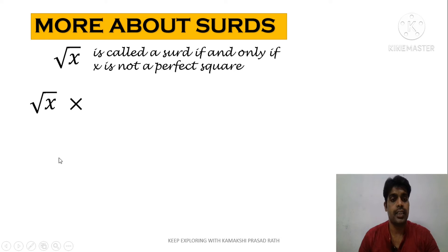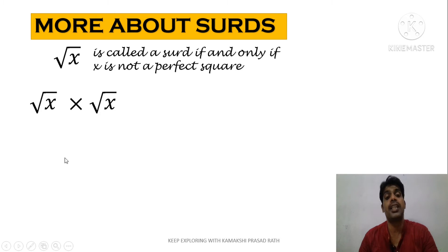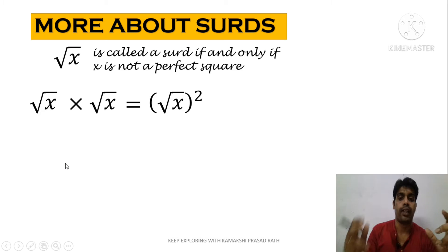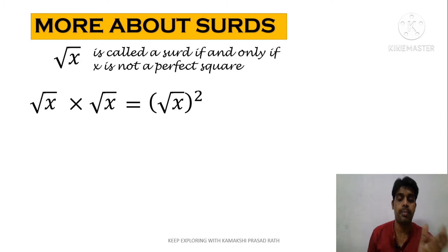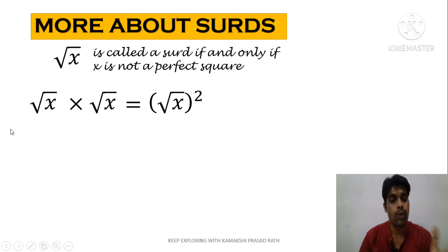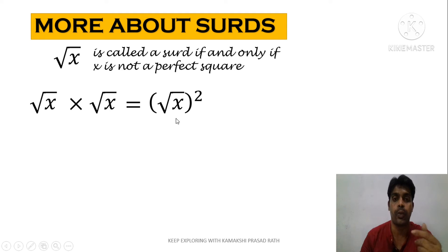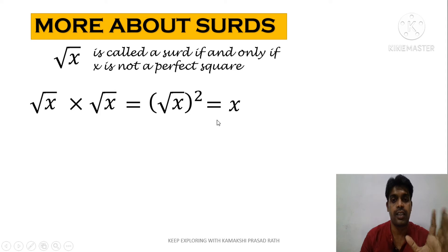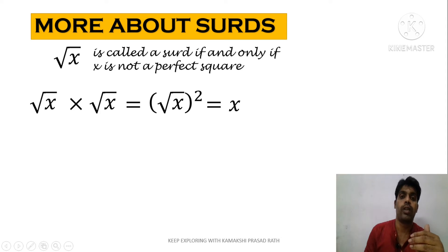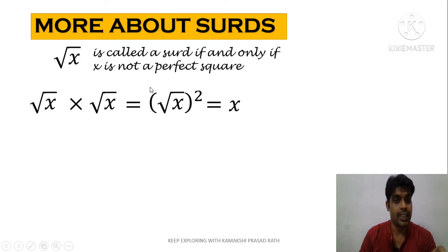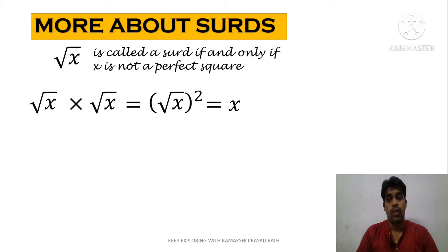So root x is a surd. If I multiply root x by root x, I get root x whole squared. Just like a times a equals a squared. We know square and square root are inverse functions, so they cancel each other out. Therefore, root x whole squared becomes simply x. This is the way we are going to convert surds into whole numbers.